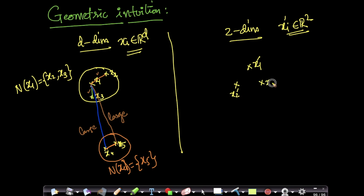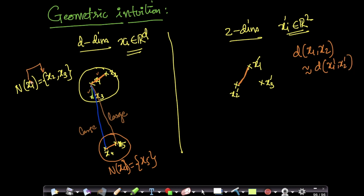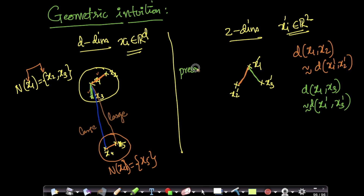I want to place x2-dash and x3-dash such that the distance between x1 and x2 — this orange line — is preserved. I want x1-dash to x2-dash distance to be very similar. Similarly, I want to preserve the x1 to x3 distance — the green line — so that x1 to x3 is roughly the same as x1-dash to x3-dash. I am preserving distances of points in a neighborhood.